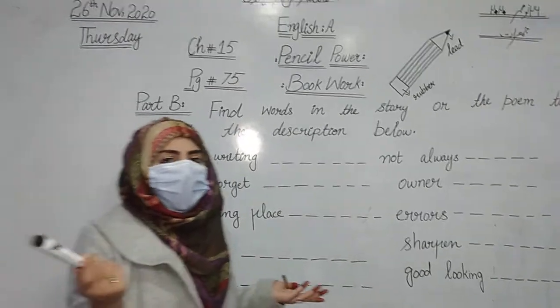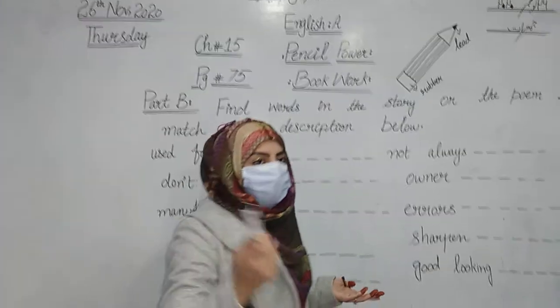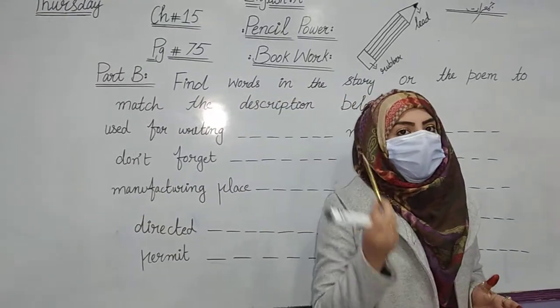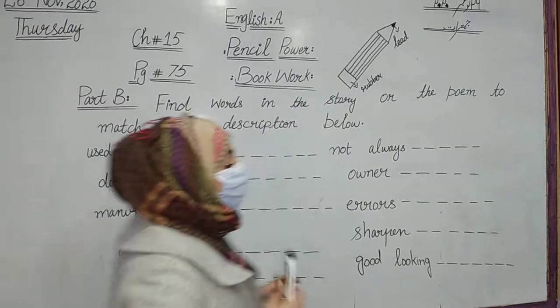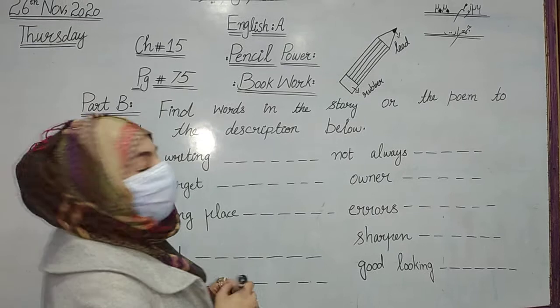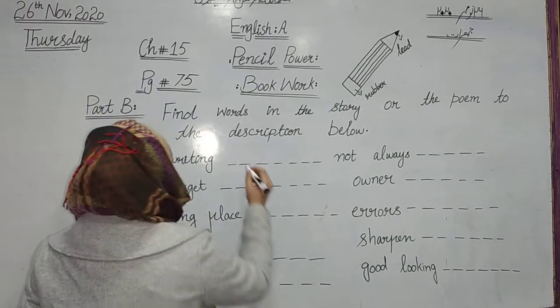The first description is: used for writing. What do we use for writing? As you know, we use a pencil. We use a pencil for writing. So write the word here: pencil.